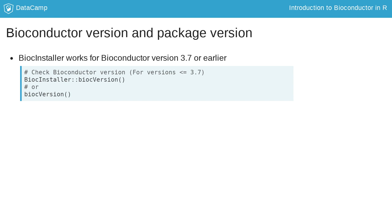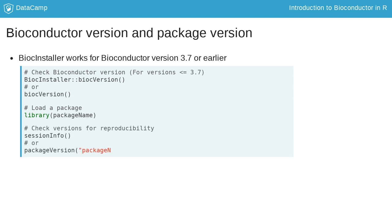Or if you have already loaded the BiocInstaller package, you can call the function biocVersion directly. To load a package, use the function library, like with CRAN packages. It's important for reproducibility to always check the versions of your packages. You can use the function sessionInfo, which gives you a list of all the loaded packages and their versions.